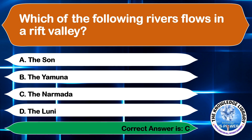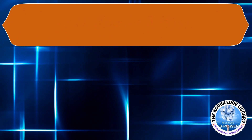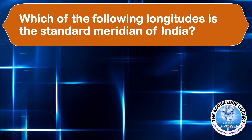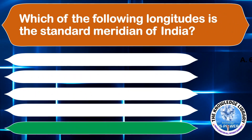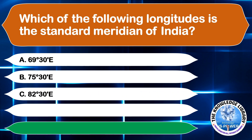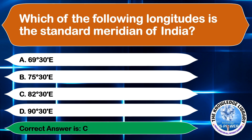Which of the following longitudes is the standard meridian of India? A. 69°30' East, B. 75°30' East, C. 82°30' East, or D. 90°30' East. The correct answer is option C, 82°30' East.